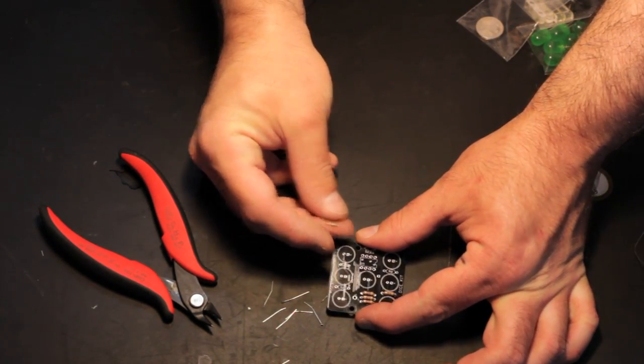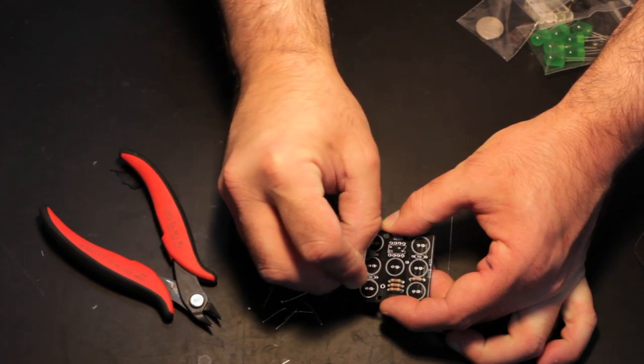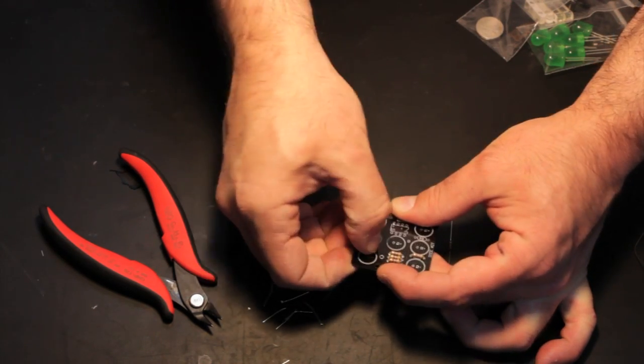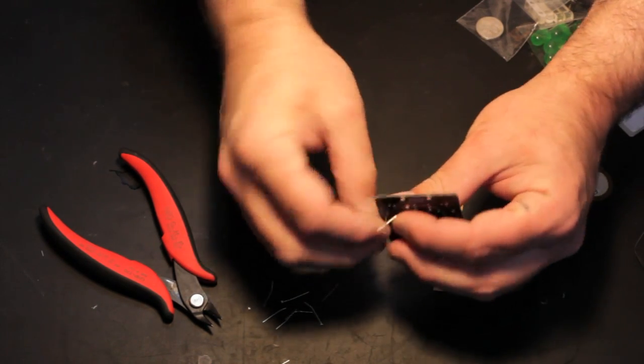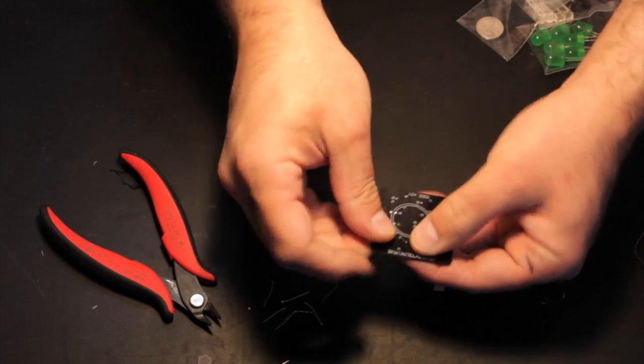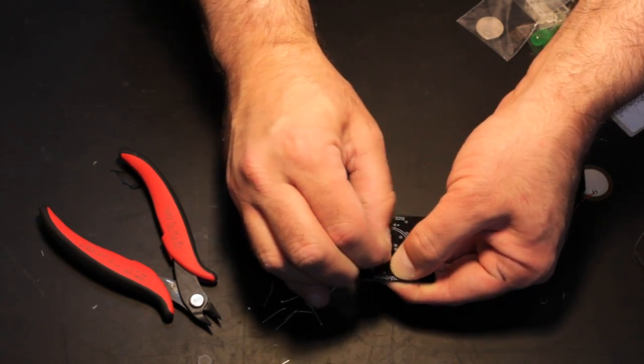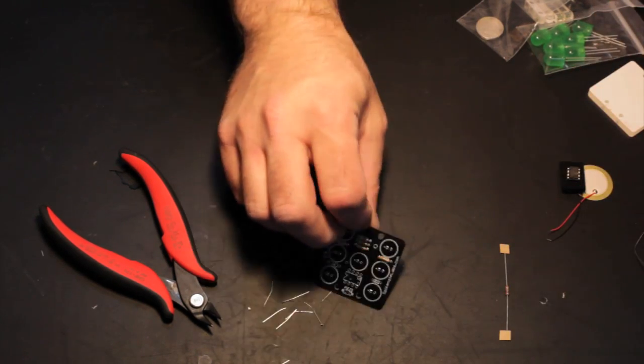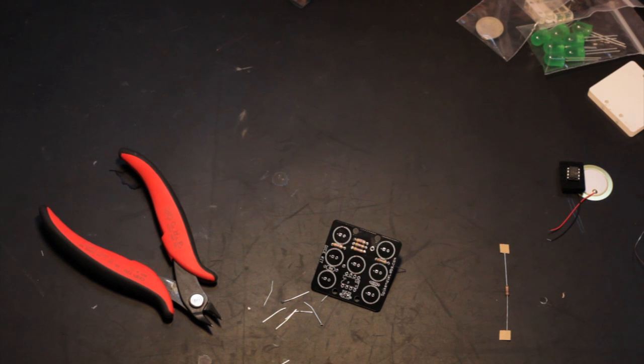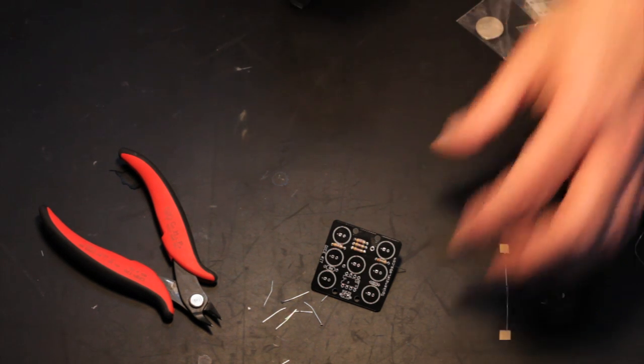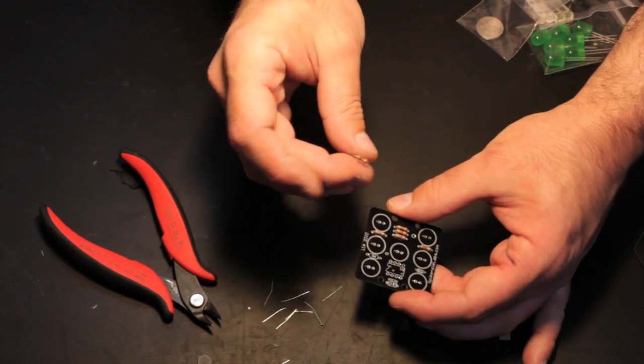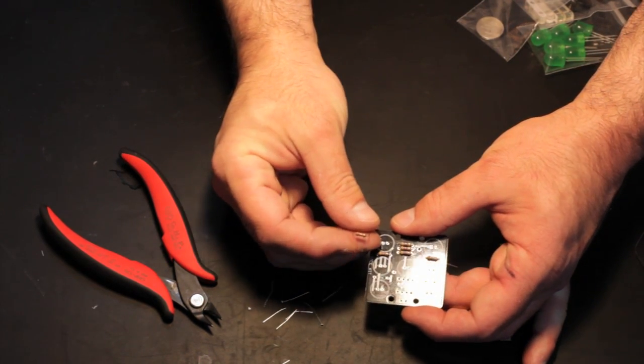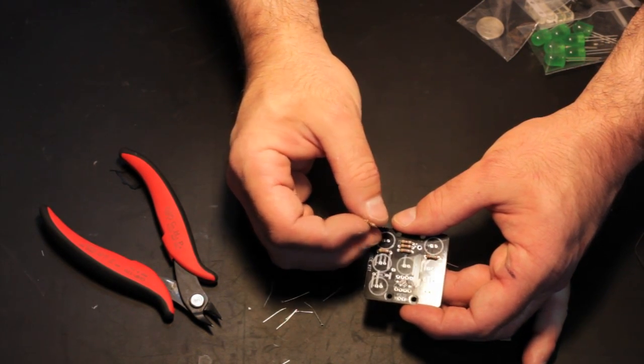R5 is brown, black, green. We will insert that into R5, push it all the way through nice and flush. Here you just pull the legs out just a little bit so it holds it in place. We'll do the same thing with R6 which is the 10K and get that in as well. It's the only remaining resistor that you have brown, black, orange.